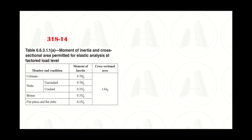ACI 318-19 has now included guidelines regarding the axial and shear stiffnesses to be used when analyzing RC structures under factored loads.